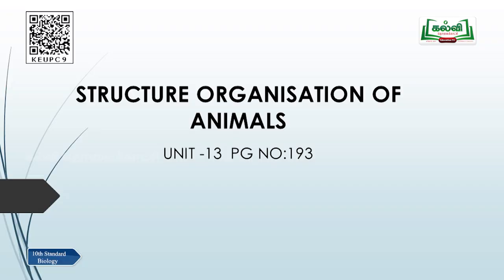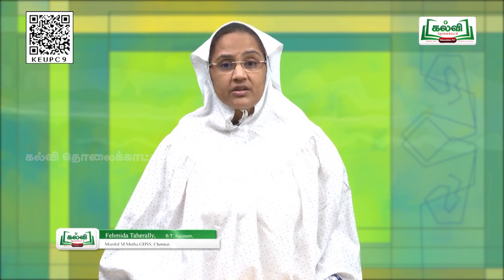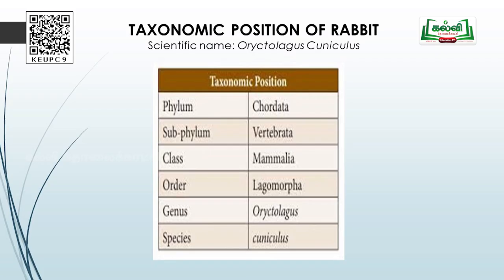Hello children, welcome to today's class. In today's class, you are going to learn Unit 13 in biology: structural organization of animals. You are going to learn about the rabbit — the external and the internal morphology of the rabbit. Let us understand the taxonomic position of rabbit.